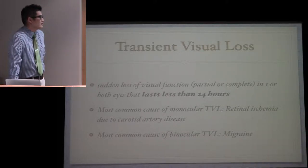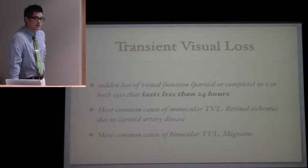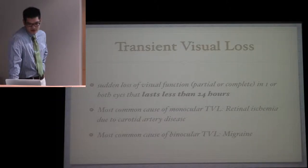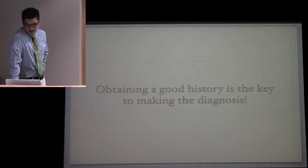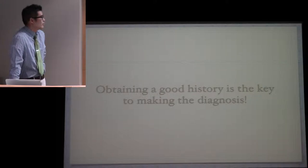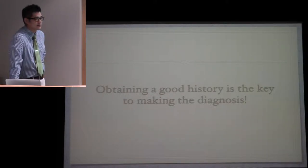The most common cause of monocular transient vision loss is retinal ischemia due to carotid artery disease, and the most common cause of binocular transient visual loss is migraine. As you always hear, Dr. Digre and Warner always belabor this point about obtaining a good history.